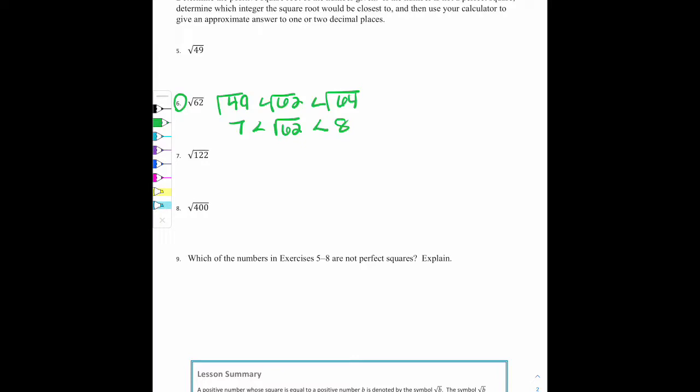Now, if I had to pick one of those, because it says to determine which integer, that's just one of them. I want to pick which one it's closer to. Well, 62 is definitely closer to 64 than 49. So 8 would be the integer that I choose. Now, as far as your calculator approximation, you would type that into your calculator. Squiggle equals means approximately. And then you can choose to round to either one or two decimal places. I chose two. So that would be 7.87.